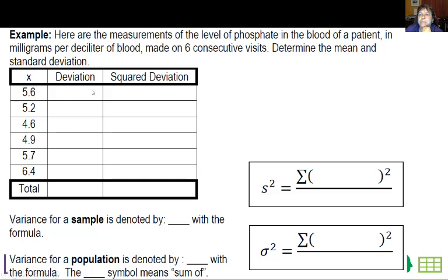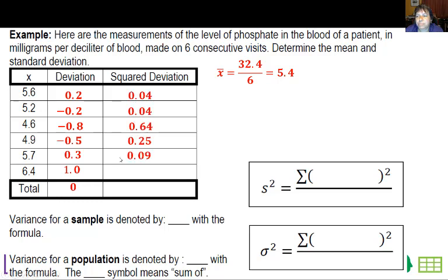Here are measurements of the level of phosphate in the blood of a patient in milligrams per deciliter of blood made on six consecutive visits. Determine the mean and the standard deviation. The mean, we add these all up and divide by 6, so we get 5.4. Then I'm going to go 5.6 minus 5.4 is 0.2, then 5.2 minus 5.4 is negative 0.2. If I did it correctly, they should all add up to zero. Now we're going to square the deviations and add them up, and I get 2.06.